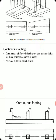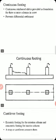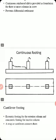Continuous footing: a continuous reinforced slab is provided as foundation for three or more columns in a row, and it helps prevent differential settlement. This figure shows a continuous footing provided under three columns.